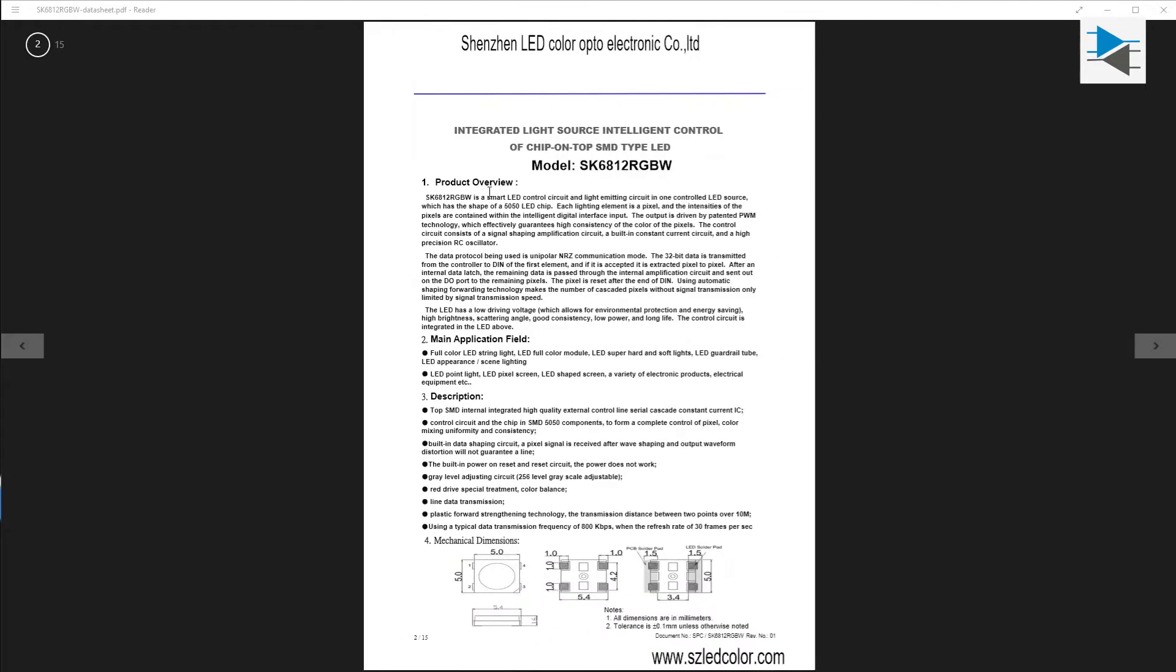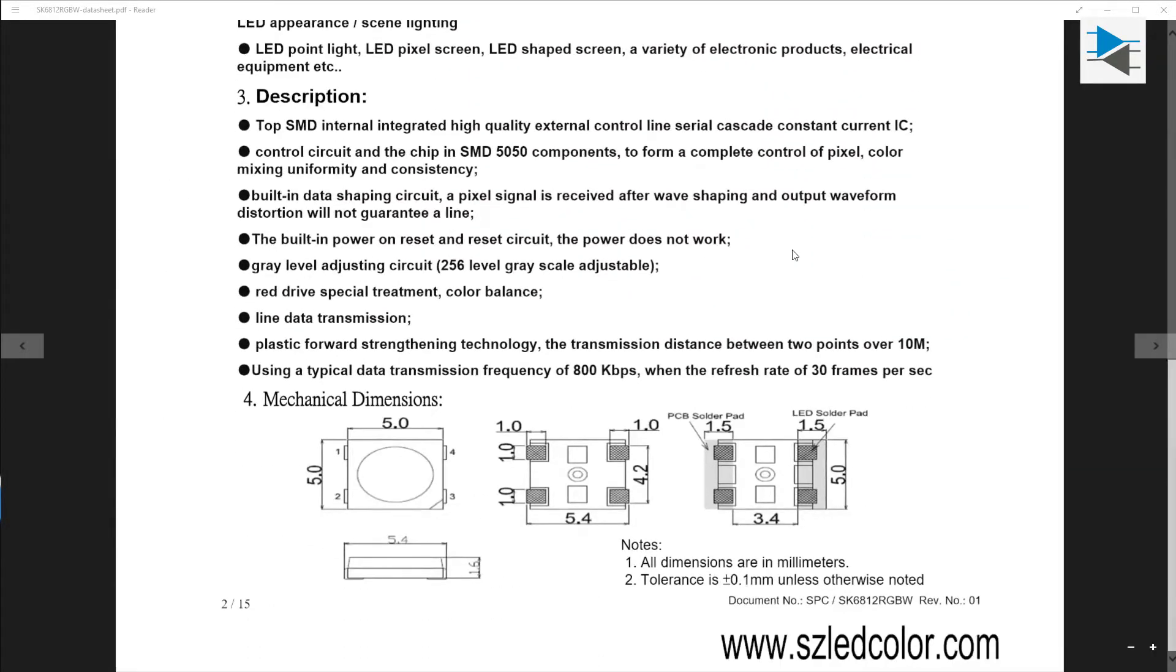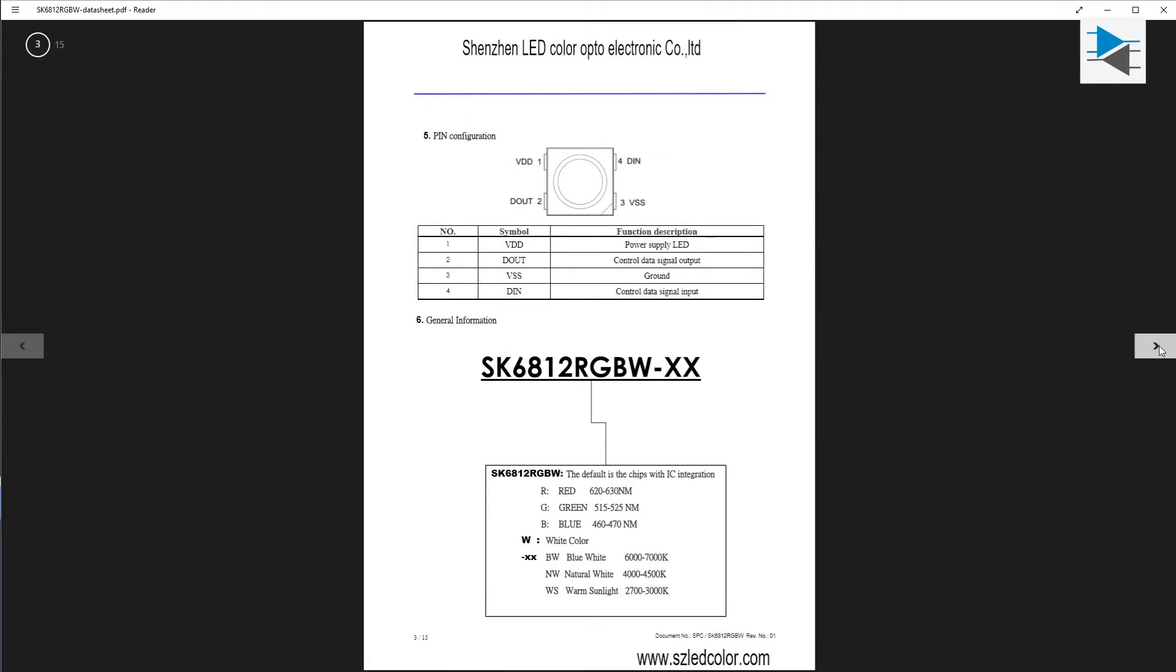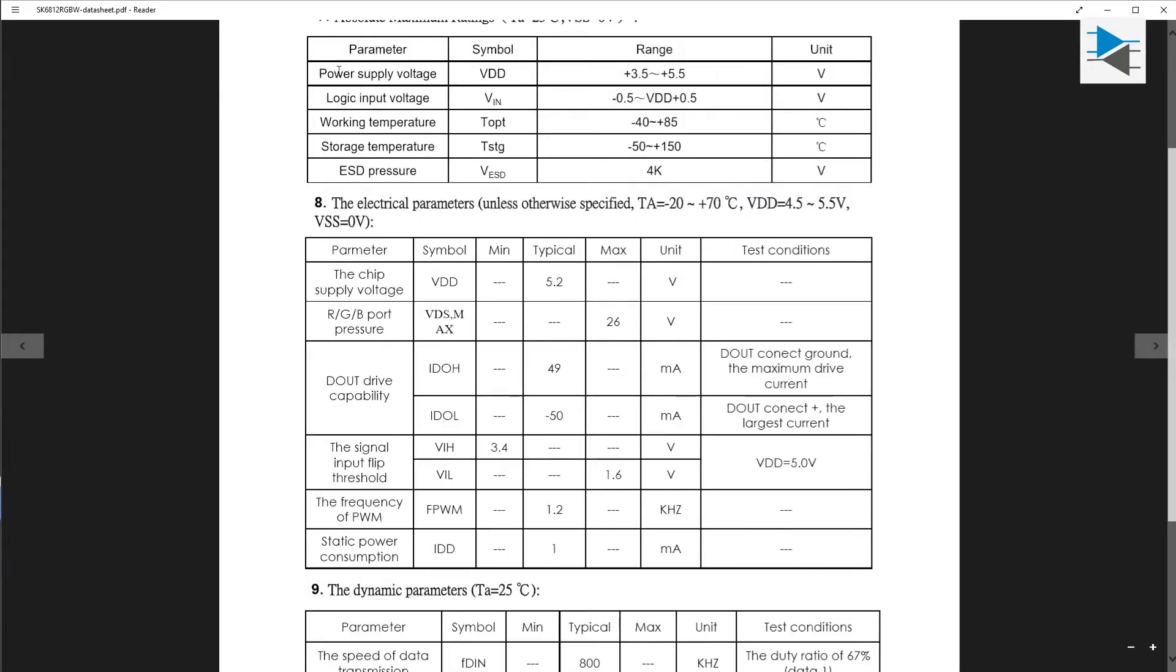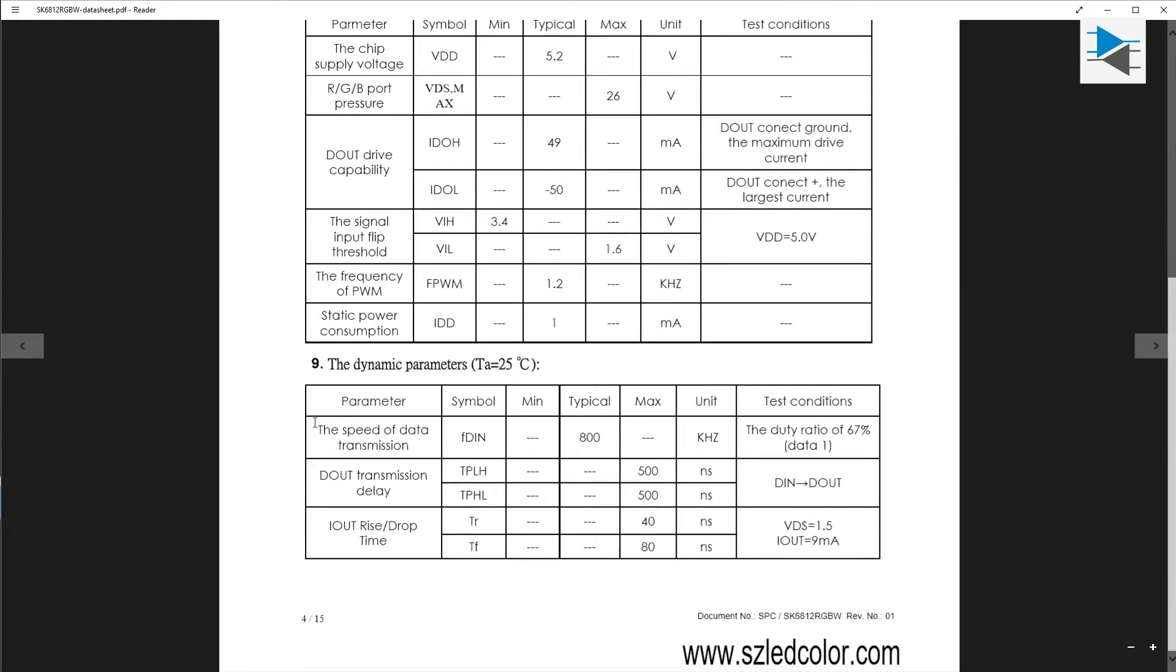In the datasheet, we have some run-of-the-mill information about the main application field, package dimensions, and some important information on the supply voltages and operating temperatures, etc. Apart from the fact that they got the notation for Hertz wrong, we now know that we have a typical data transfer rate of about 800,000 cycles per second. Noted.